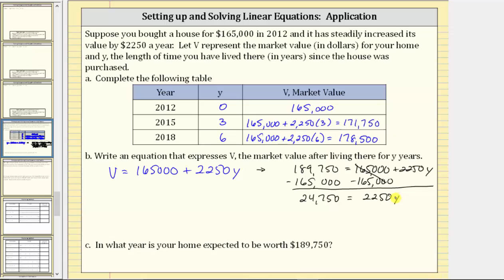Now that we've isolated the variable term, the last step is to multiply or divide to isolate the variable and solve for Y. Because $2,250Y means $2,250 times Y, to solve for Y, the next step is to divide both sides of the equation by $2,250. Simplifying on the right side, this quotient is equal to one, one times Y is Y. And now we need to find this quotient. And let's do this on the next slide.